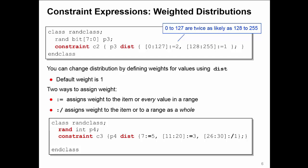The second form, colon slash, assigns the weight to the item or to the range as a whole. It divides up the weight amongst all the values in the range.